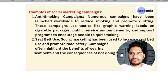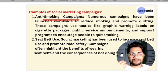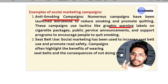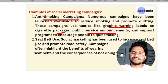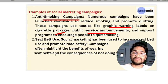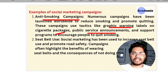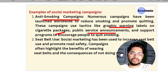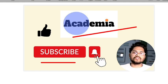Examples of social marketing campaigns: Anti-smoking campaigns — numerous campaigns have been launched worldwide to reduce smoking and promote quitting. Public service announcements on radio, television, celebrities, and leaders — support programs to encourage people to quit smoking. Seat belt campaigns — social marketing can be used to increase seat belt use, promoting road safety campaigns that highlight the benefits of wearing a seat belt and the consequences of not doing so. I hope you understood what social marketing is. Thank you so much. Please subscribe to our channel on YouTube and share this video with those preparing for CUT PGMSW. Thank you and bye bye.